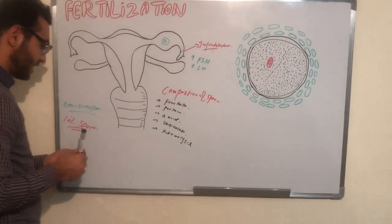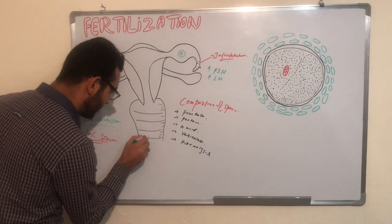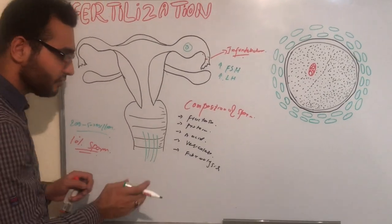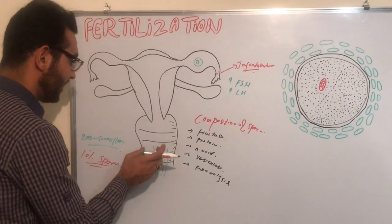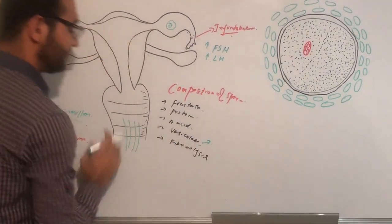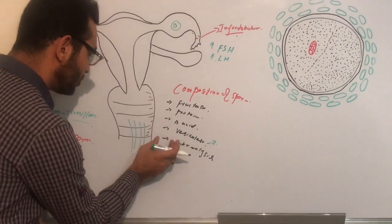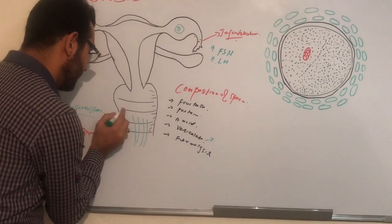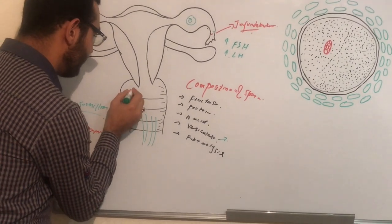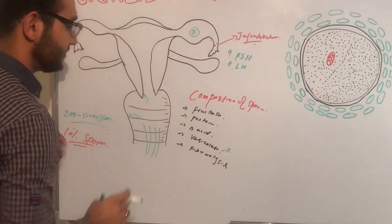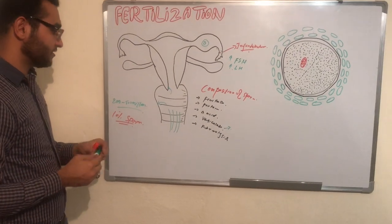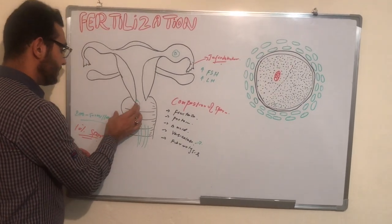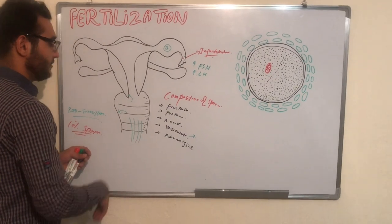When the sperm is ejaculated into the vagina, millions of sperms are released and some come out. This is because of the vesiculase enzyme, which causes coagulation — the attachment of sperms to the vaginal or cervical wall. Sperms that do not attach will come out through the vagina.